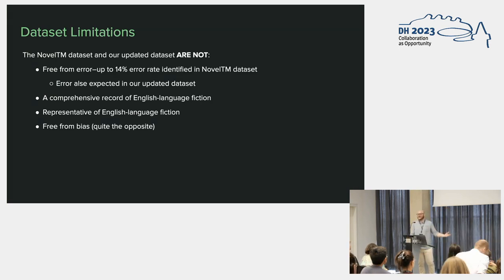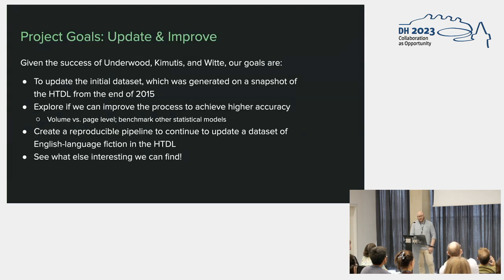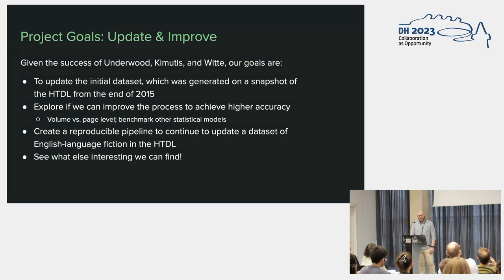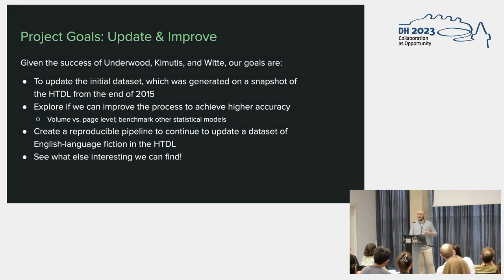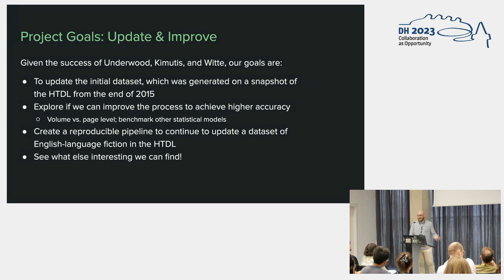The same biases will be true for the dataset we developed to update this NovelTM dataset. Given the relative accuracy of the initial NovelTM dataset, this project looked to basically update and improve the process. The original NovelTM dataset was generated on a snapshot that ended in 2015. Since then, we've had many millions of items added to the digital library — just under two million in English language that could be candidate volumes for fiction.